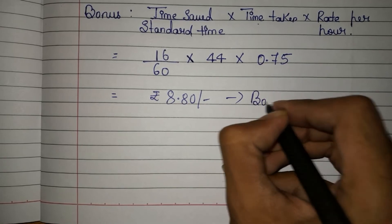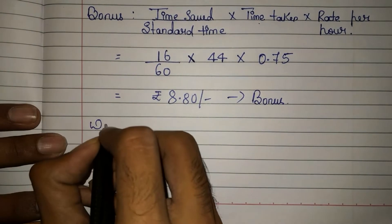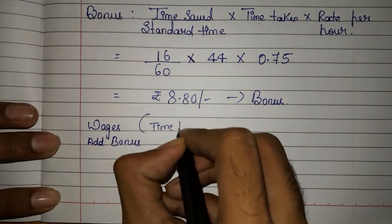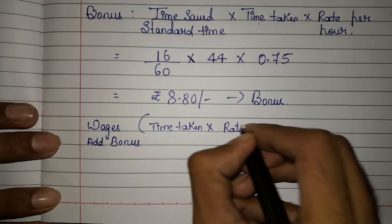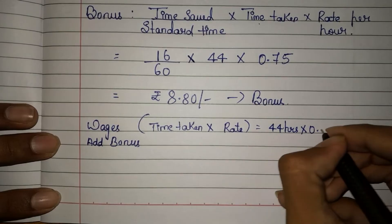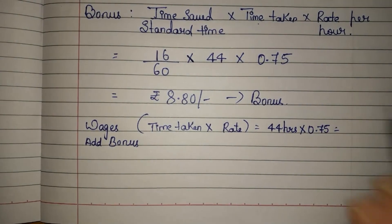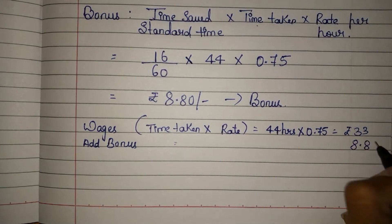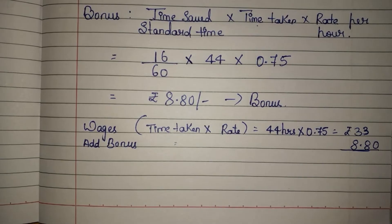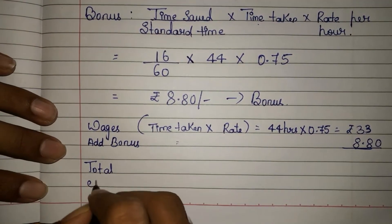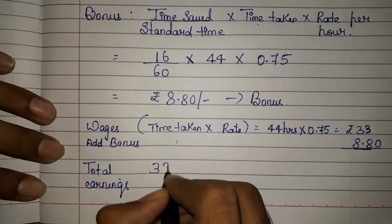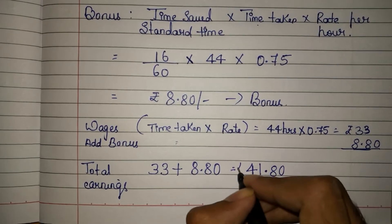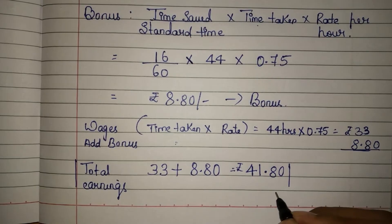8.80 rupees is the bonus. Now for total wages, we need to add the bonus. Time taken into rate: 44 hours into 0.75 gives 33 rupees. Add the bonus of 8.80 rupees — 33 plus 8.80 gives 41.80 rupees. This is the total earnings earned by the worker under Rowan plan.